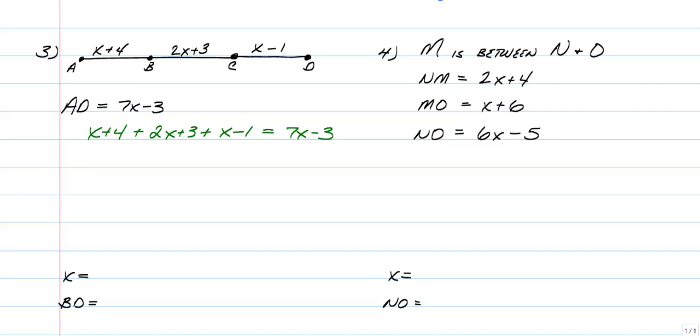And now we just use algebra to solve. So X plus 2X plus another X is going to give us 4X, 4 plus 3 minus 1 is going to give us 6, and that is equal to 7X minus 3. Now that's combining like terms on the left side.